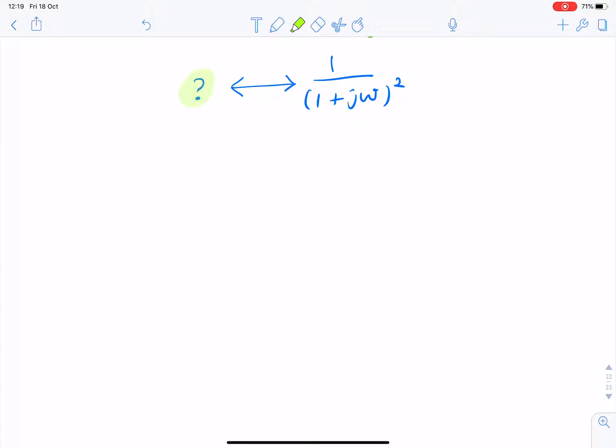So, we look at the frequency domain function we're given, and it's very similar to the given pair, the pair that's given in the question. But we notice that a very important difference is we have this power 2.